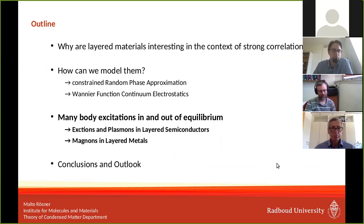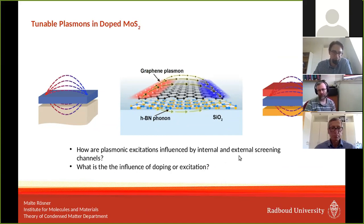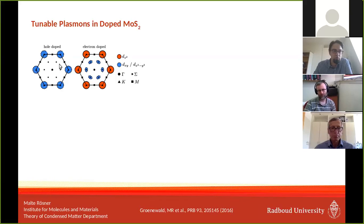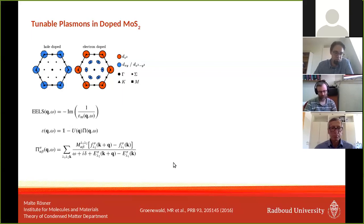Using exactly these models, we study plasmons and excitons and magnons in layered materials. In the first part, I'll give an idea of how plasmons look in 2D doped molybdenum disulfide, where we wanted to understand how plasmonic excitations are influenced by internal and external screening channels, and what the influence of doping or external excitation can be. Starting from the Fermi surface of hole-doped MoS2 with pockets around the K corners, we calculate the electron energy loss spectrum (EELS), proportional to the imaginary part of the inverse dielectric function, using RPA with our model Coulomb interaction and polarization from the minimal band structure.